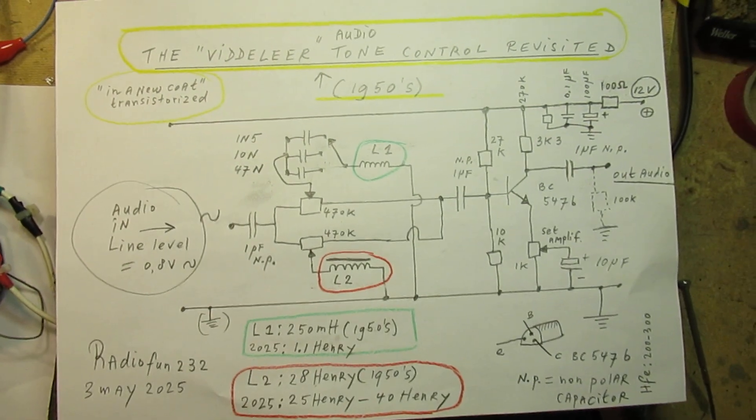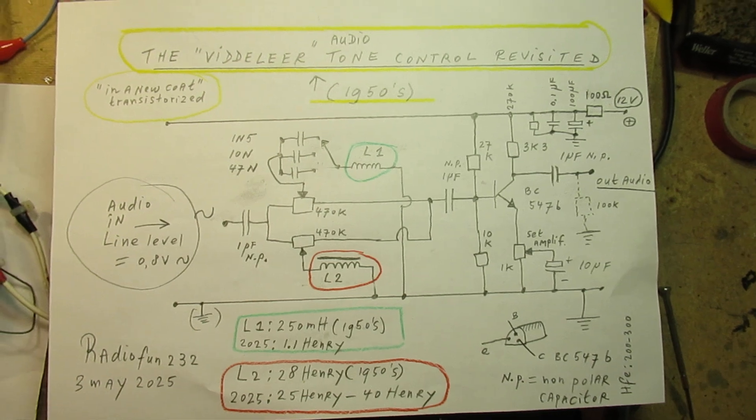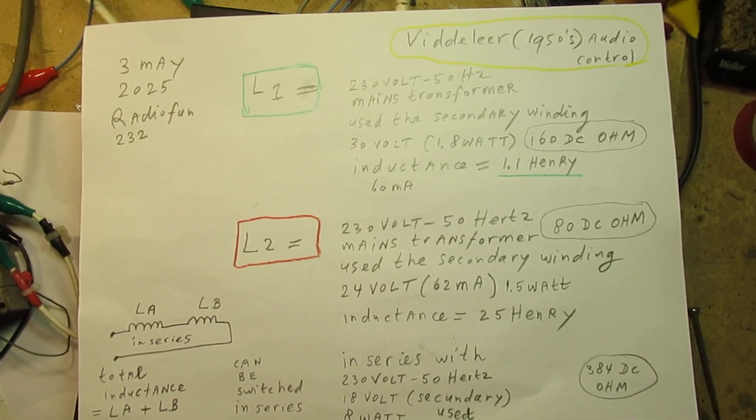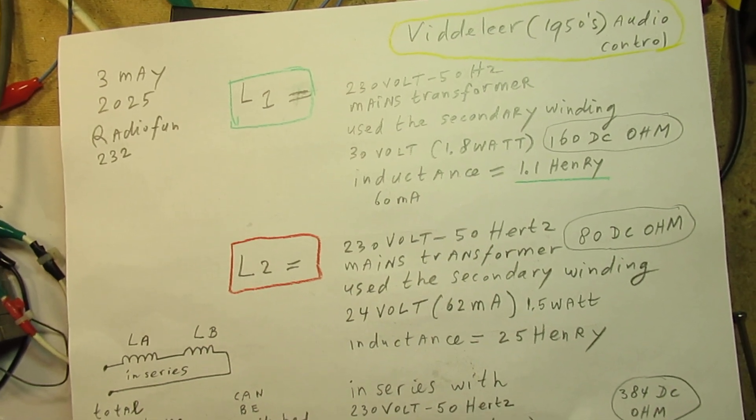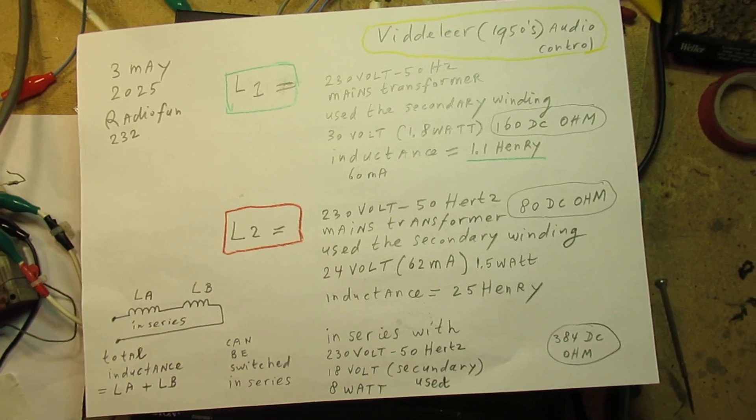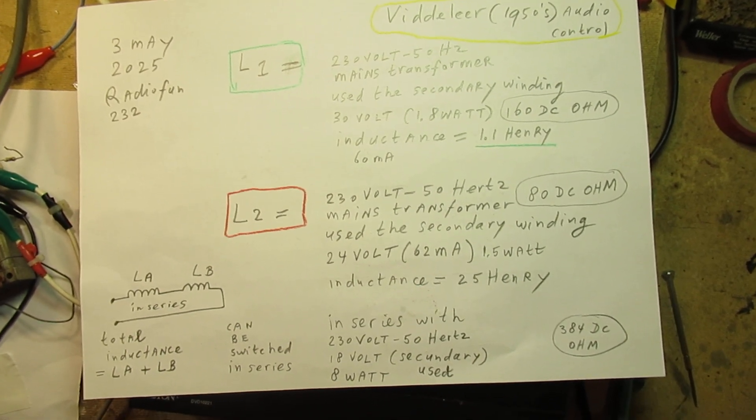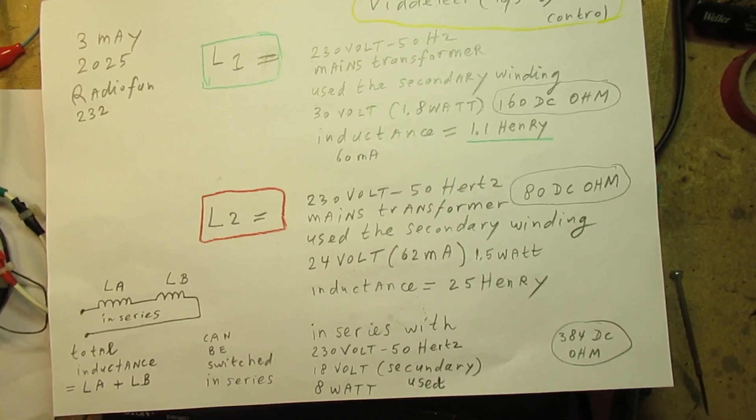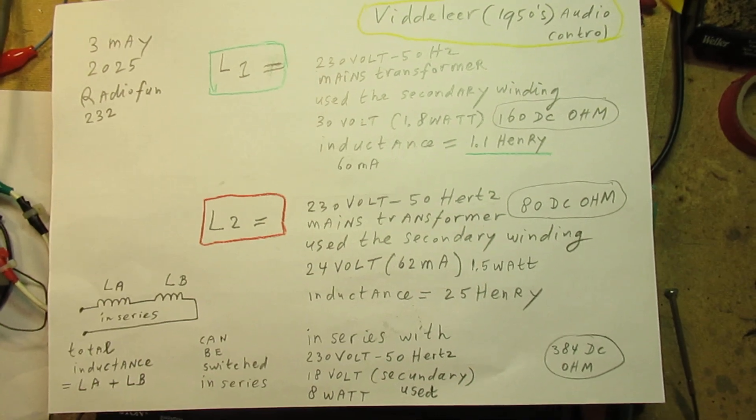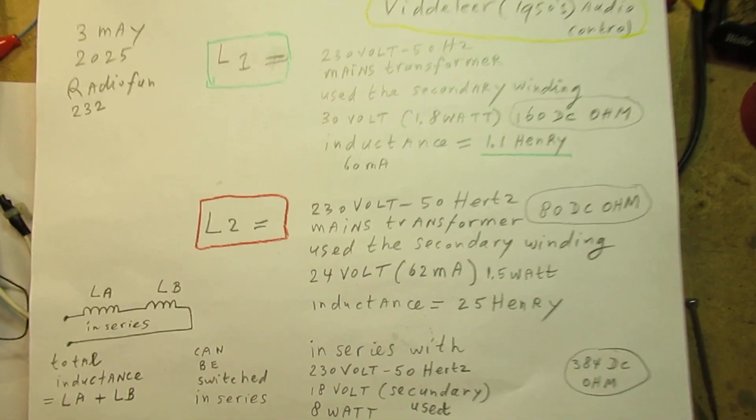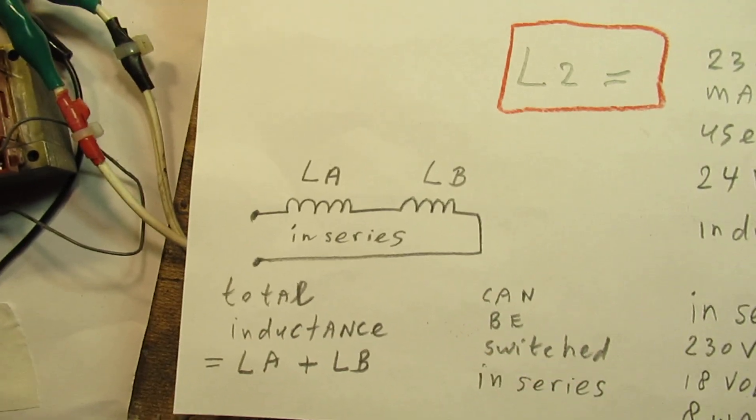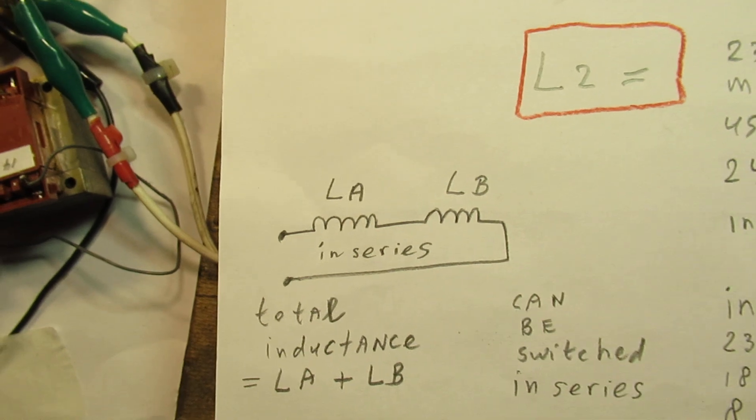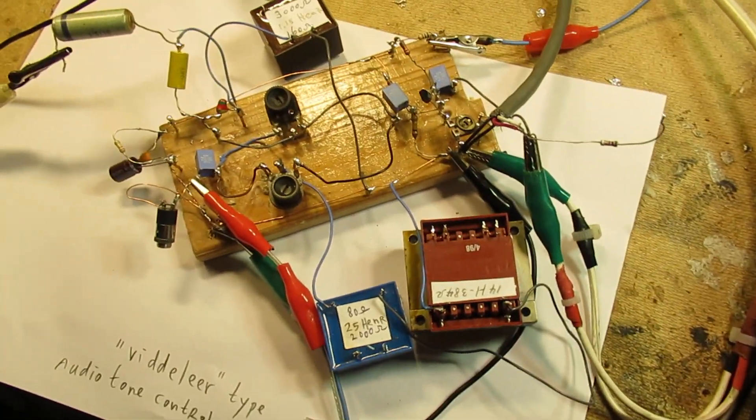Schematic again. And the transformers again. They are, in general, transformers that give out in the order of 24 volts up to 30 volts with a very low milliampere range out. Their DC resistance of the coil is in the order between 80 ohms and 380 ohms. And of course, you can switch coils in series. The total inductance, you can simply add it. So 10 Henry here, 10 Henry here - the total inductance is 20 Henry. Again, thanks for watching.